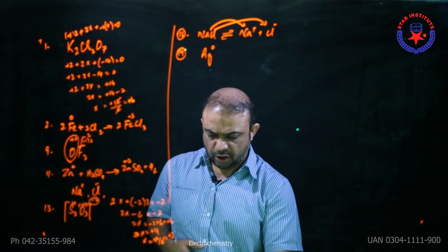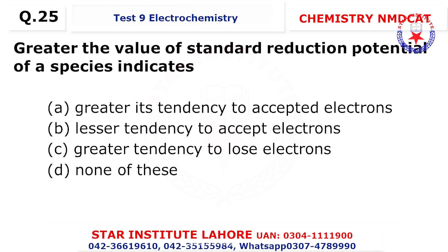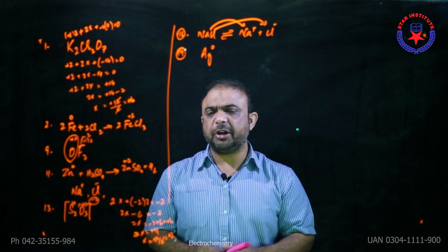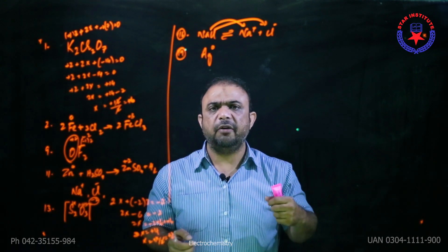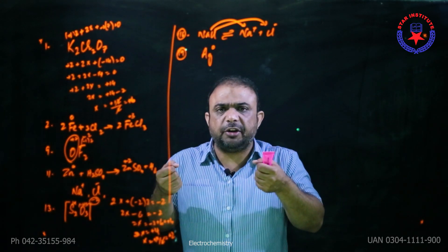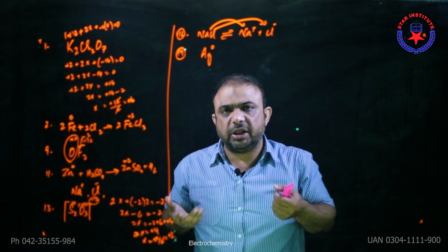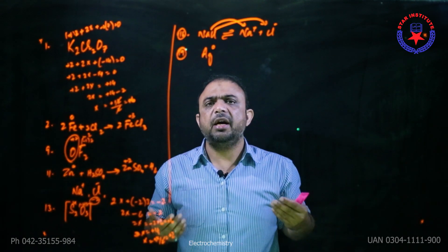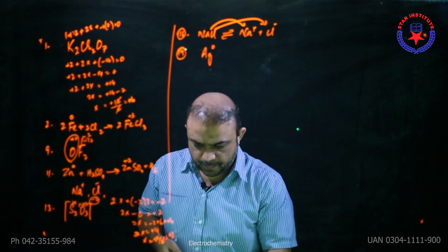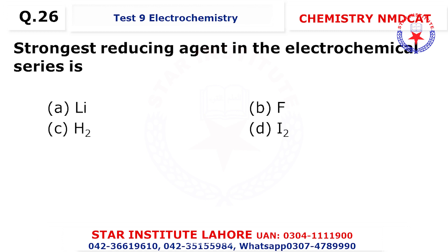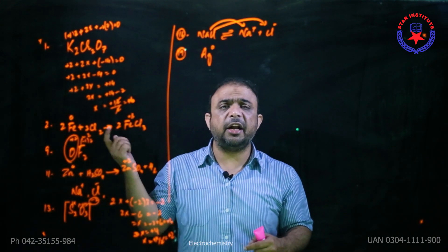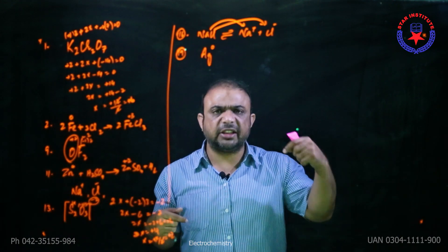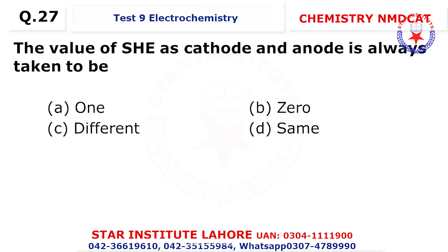Question 25: greater the value of standard reduction potential, greater its tendency to accept electrons. To identify the choice, the strongest reducing agent in the electrochemical series is lithium. The electrochemical series starts from lithium, and remember — whichever element has the lowest reduction potential will itself be the strongest reducing agent.